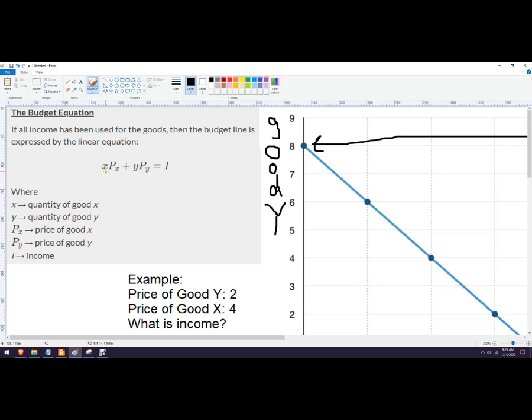So we either need to know how many goods they bought and the income, or we need to know what the prices were and how many they bought. We can figure out the income. We'll do a problem like that or some version of that.